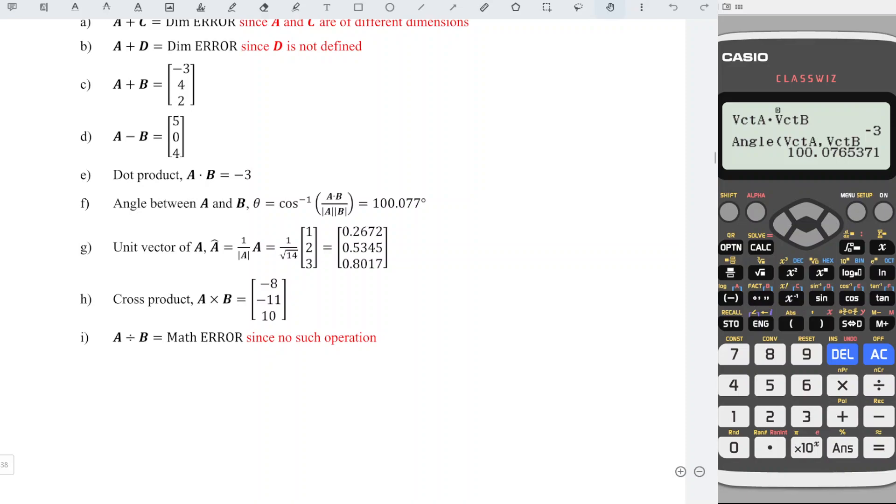Next, unit vector. Press Option, down, unit vector 4, Option, vector A3, and press equal. We will obtain the correct unit vector. The last example of this video is the cross product.